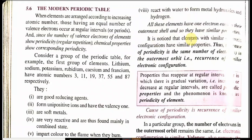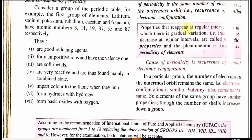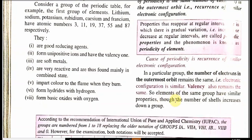Elements with a similar configuration have similar properties. Properties repeated after a regular interval show gradual variation. The cause of periodicity is the recurrence of electronic configuration. If you write the electronic configuration of these atomic numbers, you will see there is one electron in the outermost shell. In a particular group, the number of electrons in the outermost orbit remains the same — the electronic configuration remains the same — so valency also remains the same, and elements of these groups have similar properties, though the number of shells can increase.